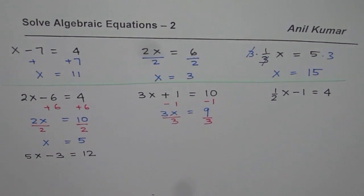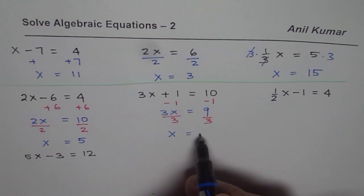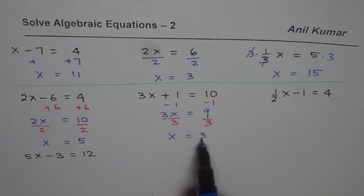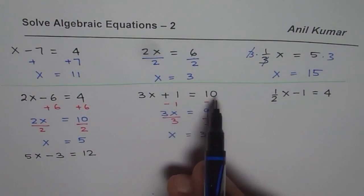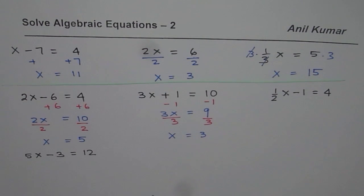When I divide by 3, 3 and 3 cancel, we get x equals 9 divided by 3 as 3. Now you should also check your answers. If x is 3, 3 times 3 is 9, 9 plus 1 is 10. Left side equals right side so that is the correct solution.